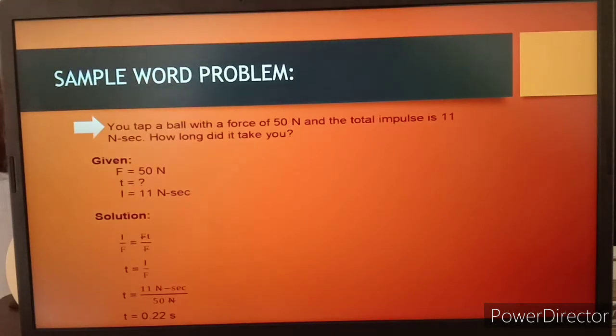We're going to derive the general formula, which is impulse equals the force times the change in time. This is the process on converting the general formula. We're just going to divide both sides by F to cancel out F here. What remains on the other side is the t.